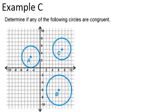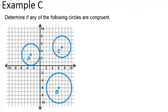And finally let's look at example C. Determine if any of the following circles are congruent. So remember the word congruent means exactly the same. So for two circles to be congruent, it will mean that they have the same radius. Or the length of the radius will be the same in each case.